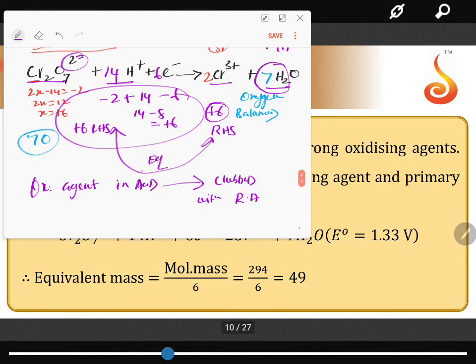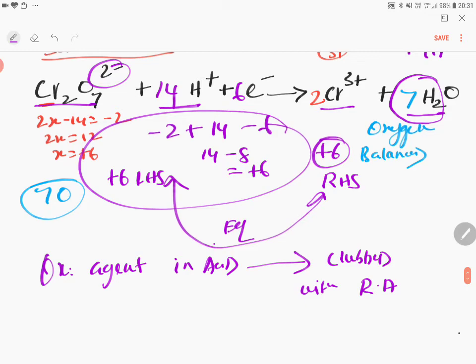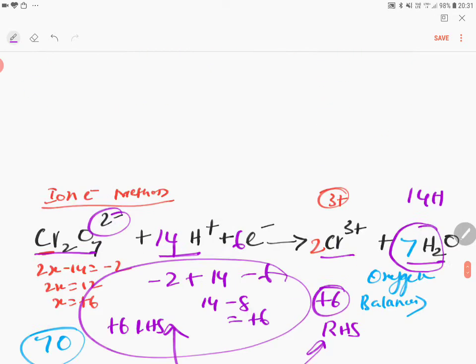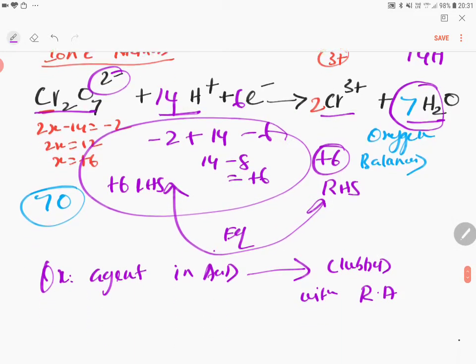We will also calculate equivalent mass, which is very important. In the previous concept video you have seen all this. Now, what is the n-factor here? From this equation, what is the n-factor? How many electrons are involved?